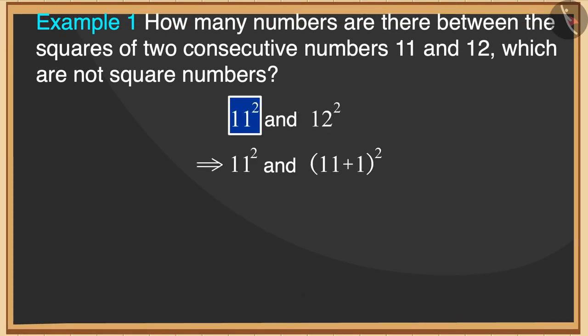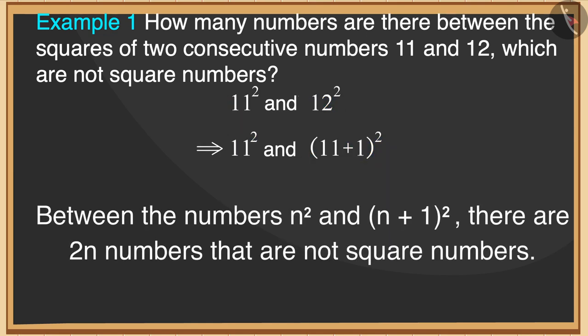Here, we can write the squares of the numbers 11 and 12 in this way. We know that between the squares of numbers n and n plus 1, there are two n numbers that are not square numbers.